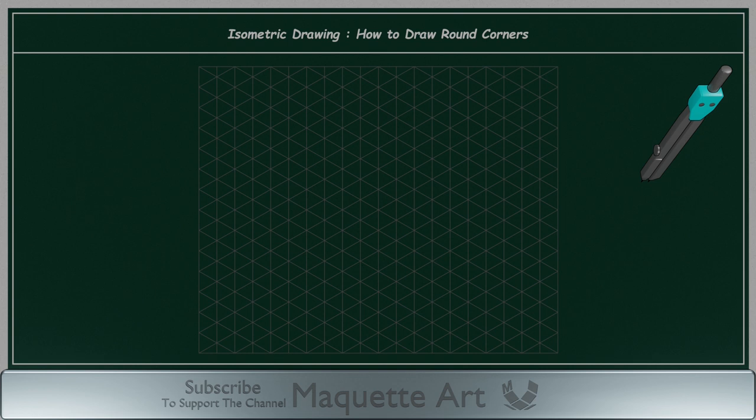Now how to draw a shape like this? I will call this an inverted round corner. Can we draw it using the method I just explained? Well, the answer is yes. Let's see how.